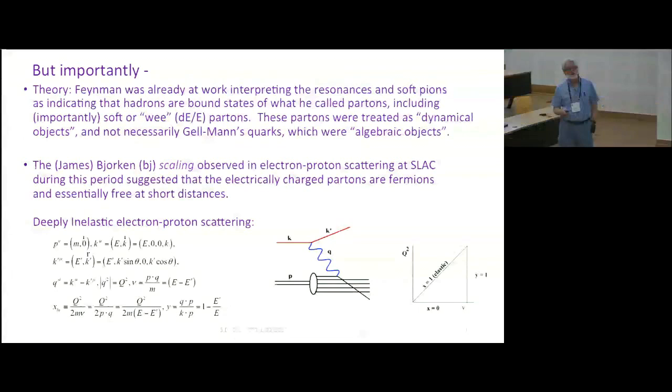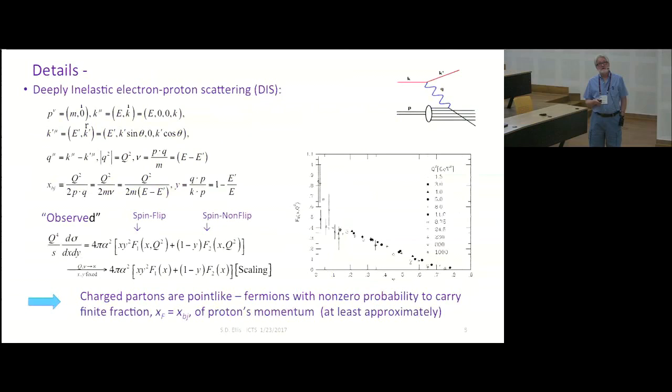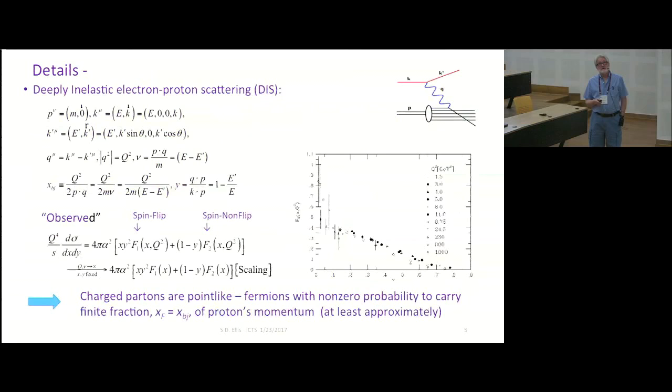There was this experiment going on at SLAC where they scattered electrons. That was named after James Bjorken, better known as BJ. So here's the kinematics. You've got the proton, which is sitting still because it's the laboratory, the electron coming in and coming out. It gets scattered through some angle, and there's this photon with momentum q, momentum squared q squared.